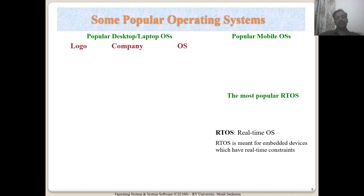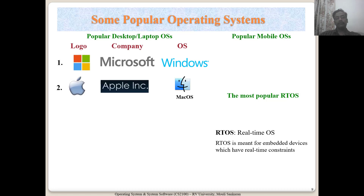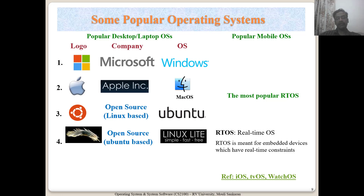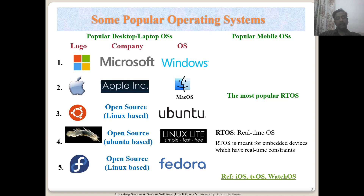Looking at the popular desktop or laptop OS: we have Microsoft — the company — and Windows is the OS. Then Apple Mac OS. Then we have Ubuntu, an open-source Linux-based operating system which we will be using, running on Windows Subsystem for Linux in the Windows environment. There are many more Linux flavors which are very popular — Linux Lite is meant for embedded or IoT applications, essentially a reduced version of Linux. Fedora is also another popular Linux flavor.